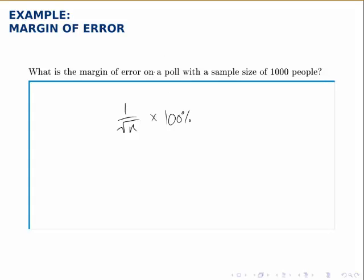Again, there's some simplifying assumptions that lie behind this, but for our purposes this is good enough. In this example, n is a thousand, so the margin of error is one divided by the square root of a thousand times a hundred percent.